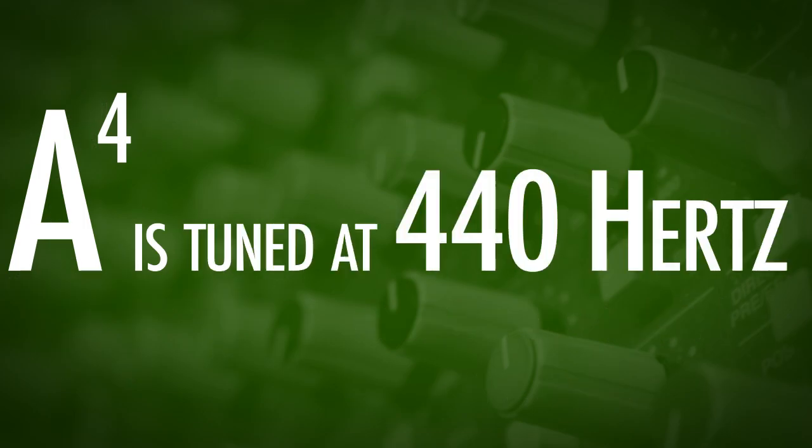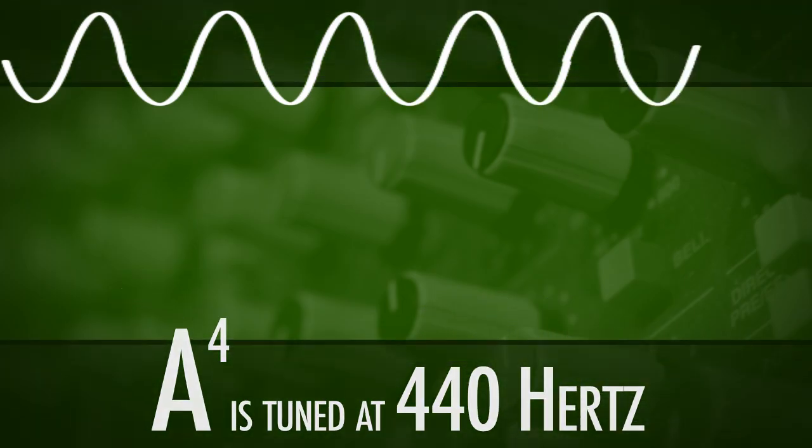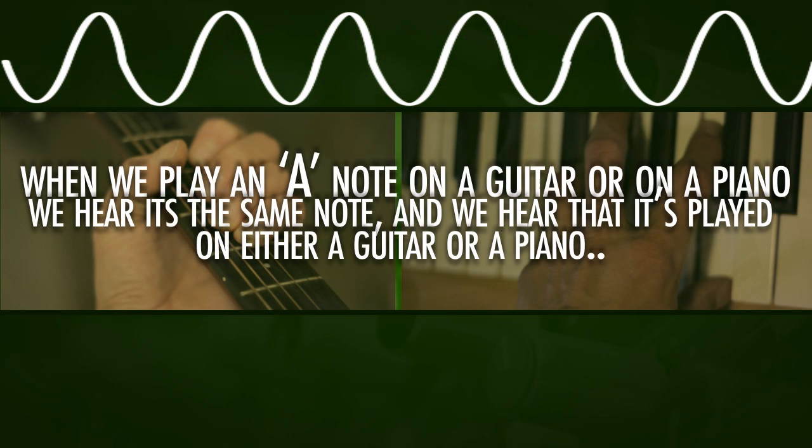A concert A is tuned at 440 Hertz. If we play that A note on a guitar or on a piano, it's the same note but still we can hear that it's a piano or a guitar.